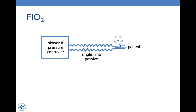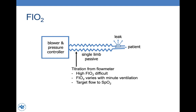Returning to the cartoon of the bi-level device — some devices have a blender, allowing us to set FiO2 directly as we would on an ICU ventilator. However, some devices do not have an internal blender, so we will need to titrate oxygen into the circuit from a flow meter. With the titration approach, it is difficult to deliver a high FiO2, and the FiO2 will vary with minute ventilation — if minute ventilation increases for the same oxygen flow, FiO2 will decrease, and vice versa. With either approach, target FiO2 based on oxygen saturation measured by pulse oximetry.